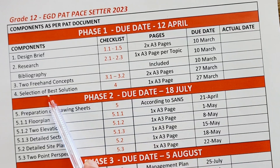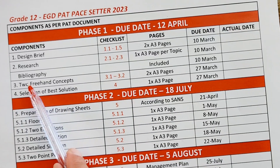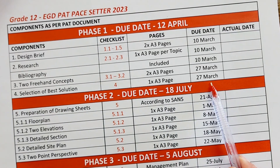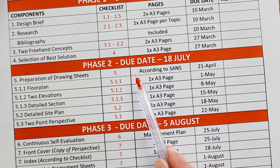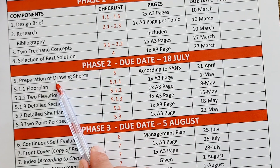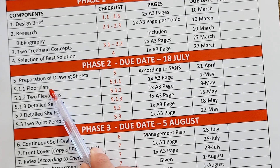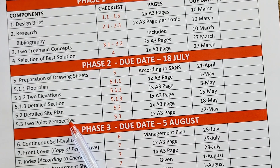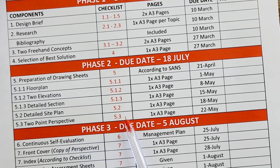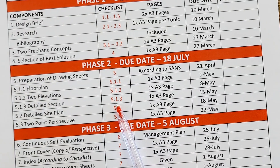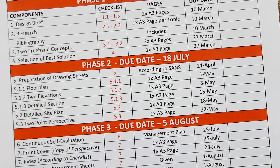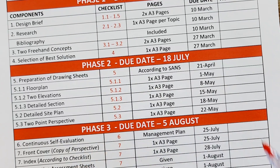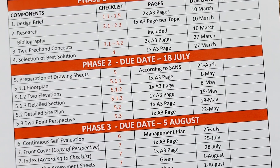By the end of Term 1, you will need to finish your freehand concepts and select your best solution. When we come back in Term 2, it is the preparation of the drawing sheets: the floor plan, two elevations, detail sections, a detail site plan, and the two-point perspective. Again, this all refers to specific points within the checklist that will help you know exactly what the requirements are.